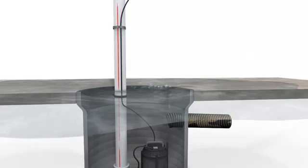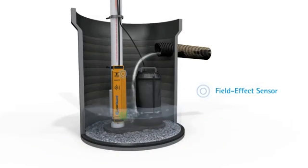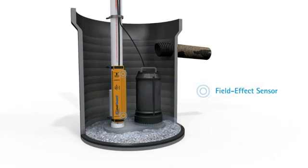You gotta level guard that sump pit. Level Guard sump pump switches are designed with two field effect electronic sensors that monitor for the presence of fluids. Once both sensors detect the presence of water, a solid state switch sends power to the pump via piggyback plug.